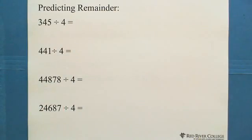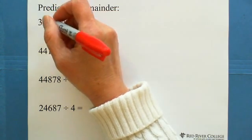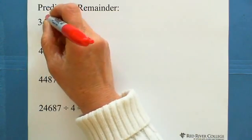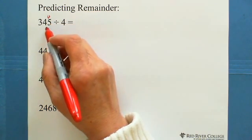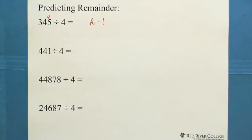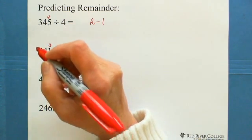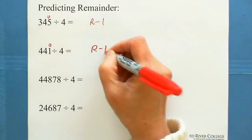How to predict the remainder for division by 4: look at the last two digits and find the closest number smaller than or equal to them that is divisible by 4. For example, with last two digits 45, the closest number divisible by 4 is 44. So for 344 divided by 4, since 44 is divisible by 4, the remainder is 1. Also, 440 is divisible by 8, but 441 is not, so the remainder is still 1.